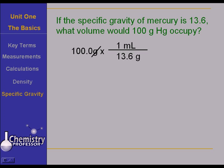Our units cancel, and we are left with 7.35 milliliters. Now, this is a very simple problem, but it does point out a couple of important things. One is that specific gravity has no units. The other is that you can very easily determine what the density of a solid or a liquid is by looking at the specific gravity.